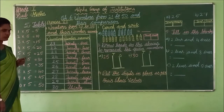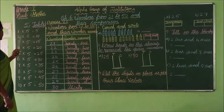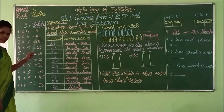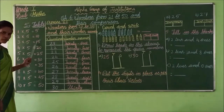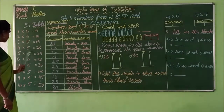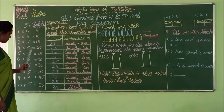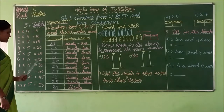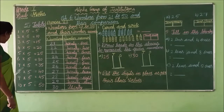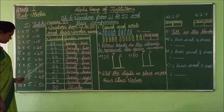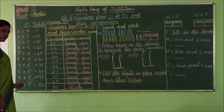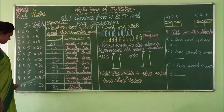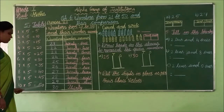You have to practice 5 tables. Listen here: 1 five is 5, 2 fives are 10, 3 fives are 15, 4 fives are 20, 5 fives are 25, 6 fives are 30, 7 fives are 35, 8 fives are 40, 9 fives are 45, 10 fives are 50.